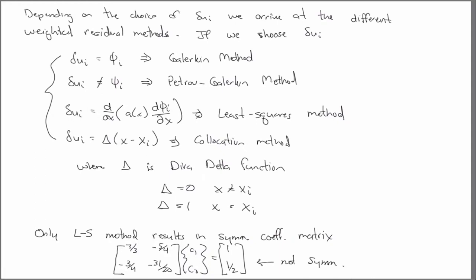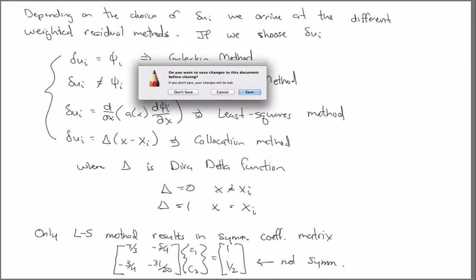There is another method which will give us a symmetric coefficient matrices, and it's called the Ritz, or the Rayleigh-Ritz method.